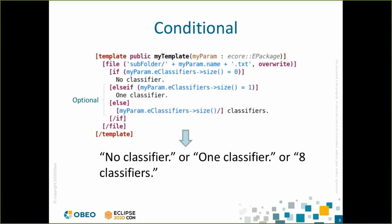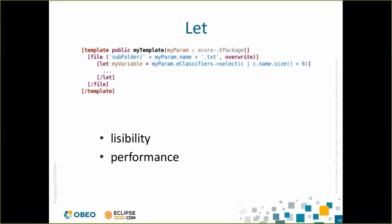In Acceleo, all variables are immutable, but you can define new variables using the let statement. The created variable will be accessible in the body of the let. It can be useful to improve readability or performance, since the value will be computed only once.